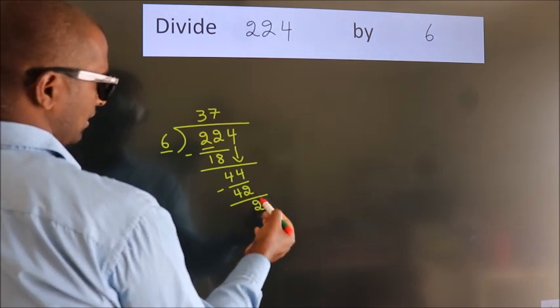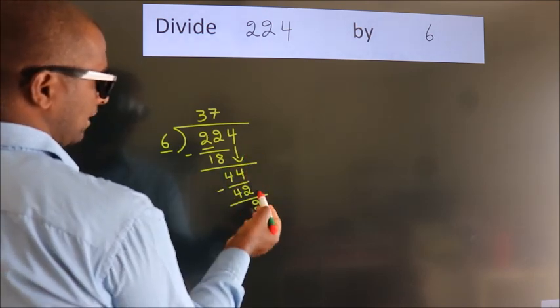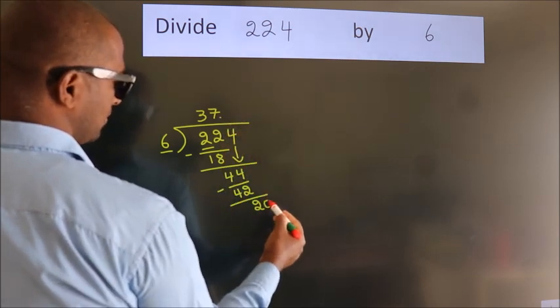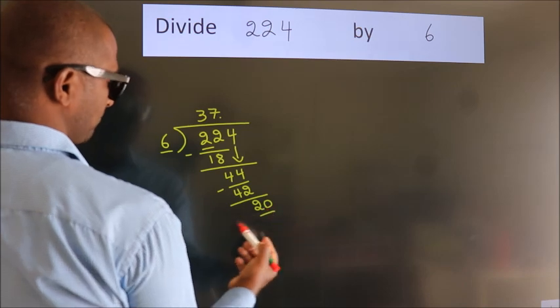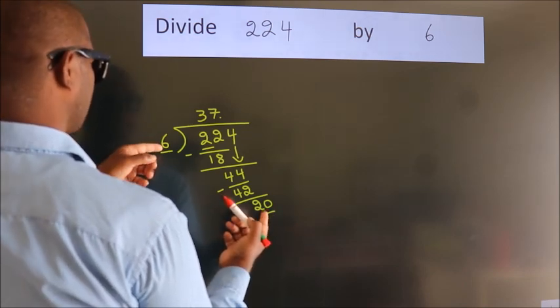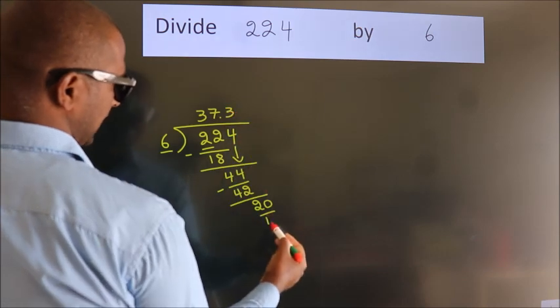After this, no more numbers to bring down. So what we do is, we put a dot and take 0. So, 20. A number close to 20 in the 6 table is 6 threes, 18.